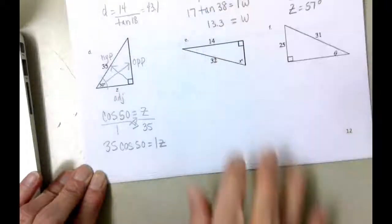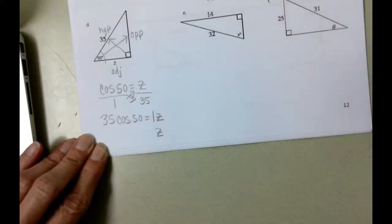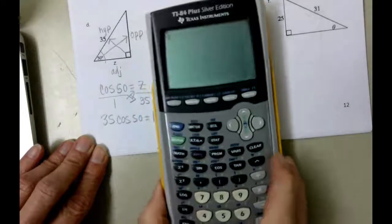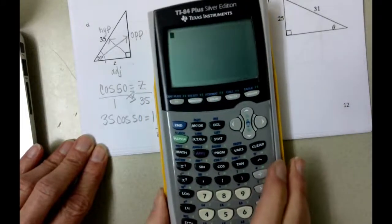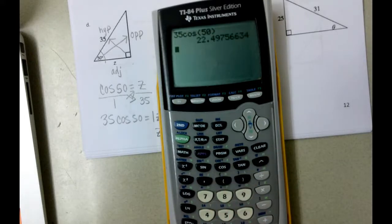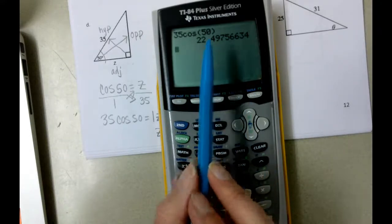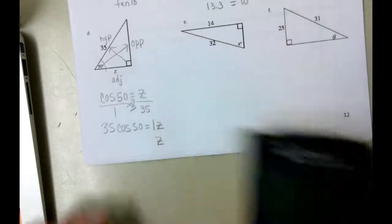And then what's going to happen is 1 times Z is Z. So we simply come over here and we would be typing in the same thing that we type into Desmos, which is 35 times cosine of 50. And we get 22.49. And when we're finding the side length, we're going to round to the nearest tenth. The 9 is 5 or higher, so we're going to end up with 22.5 for our side length.